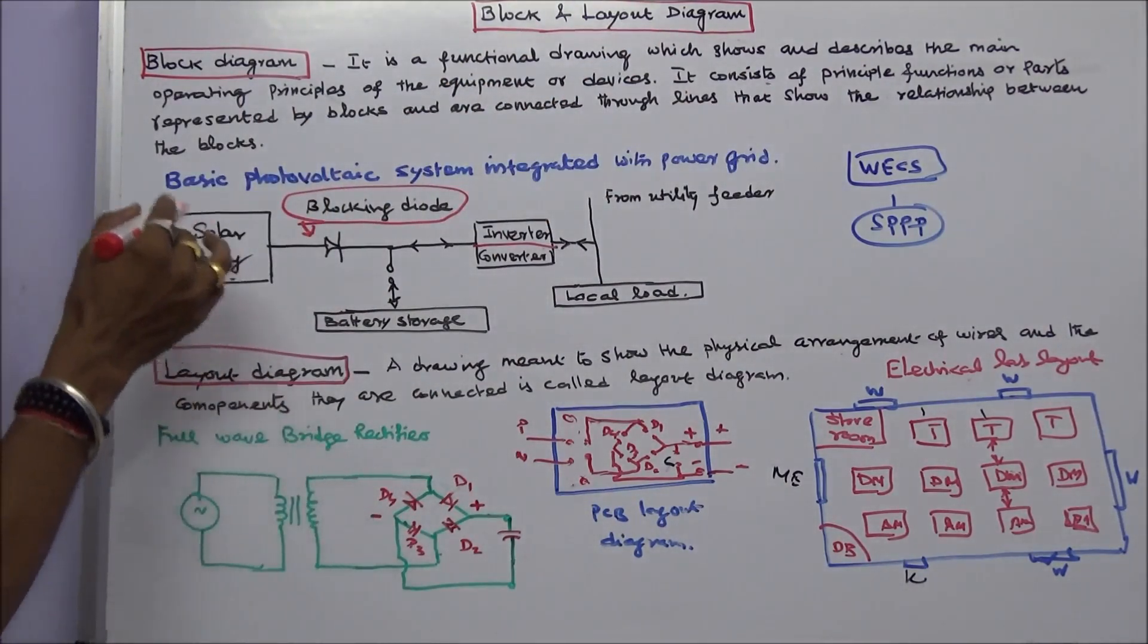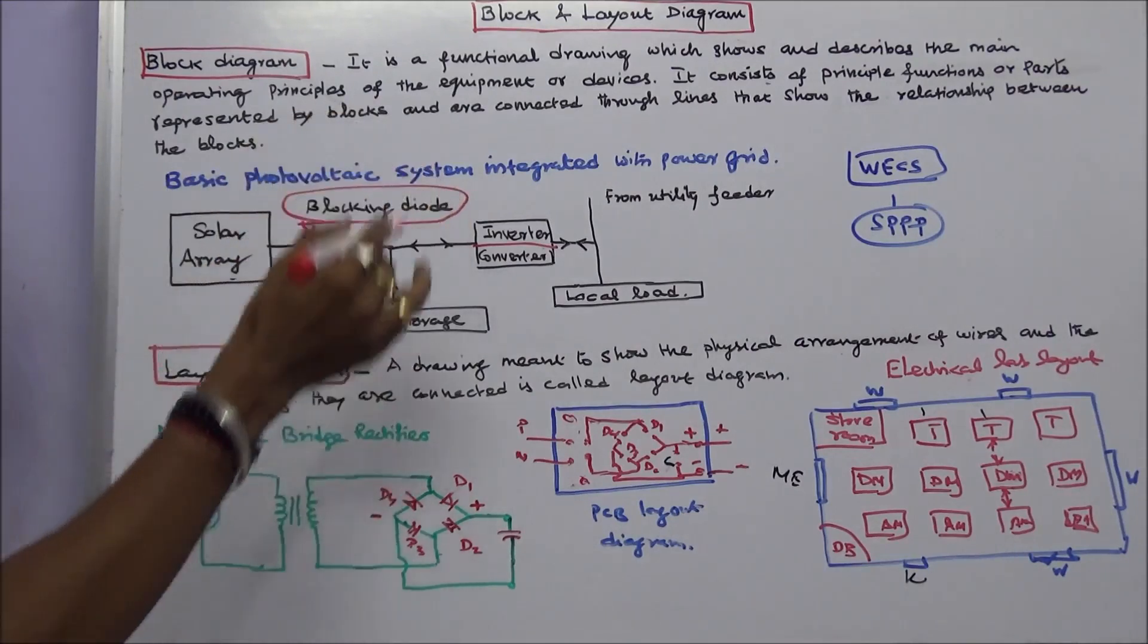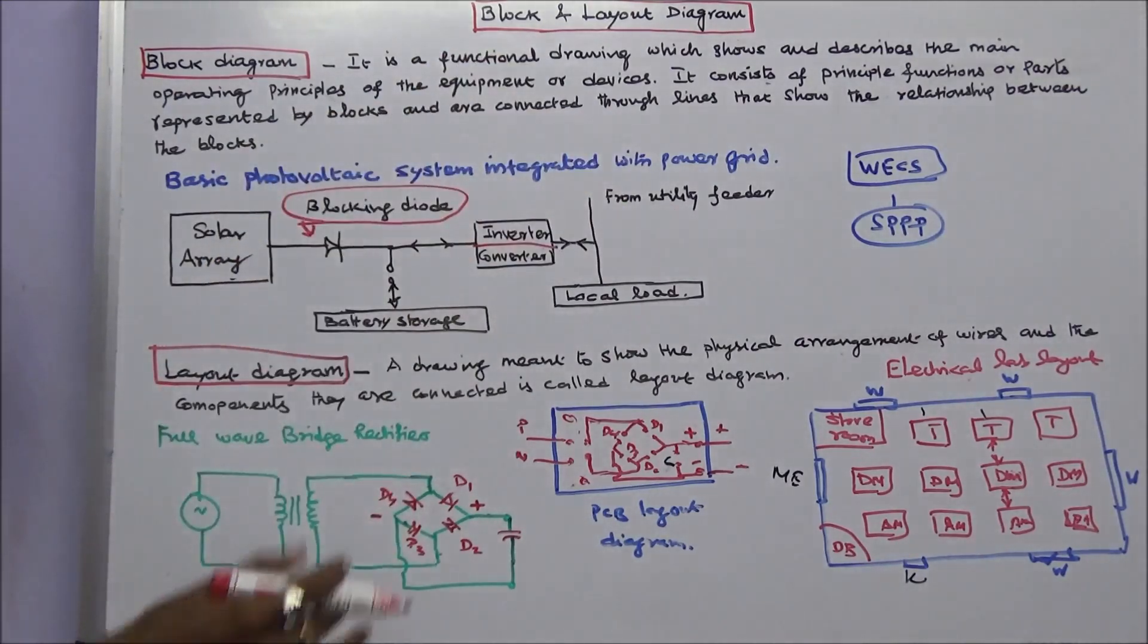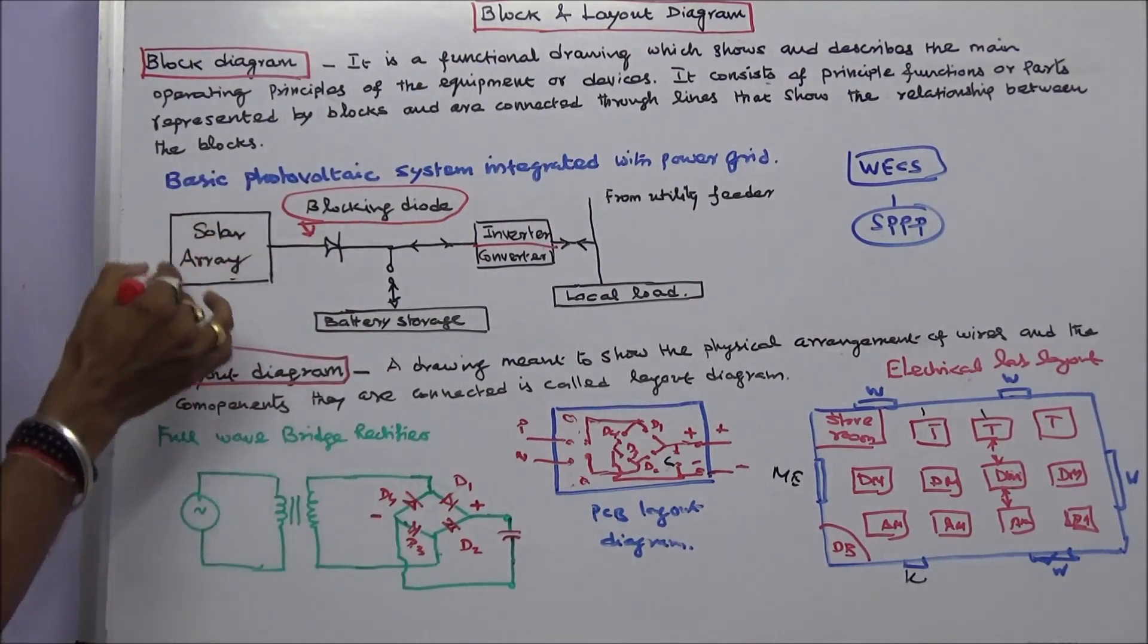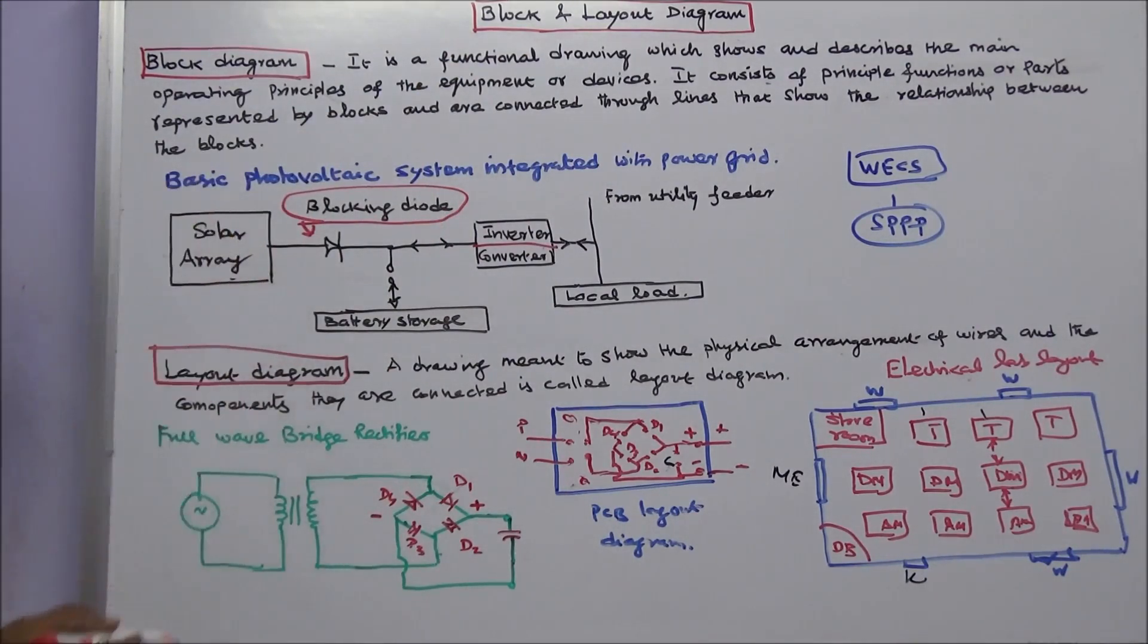So this is the basic photovoltaic system integrated with the power grid. This is a block diagram. Here this is a solar array. This block is a solar array.